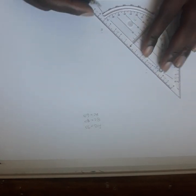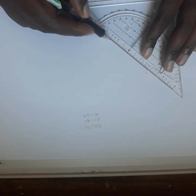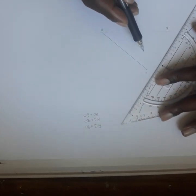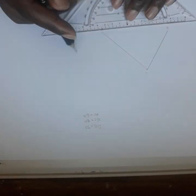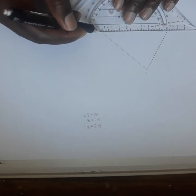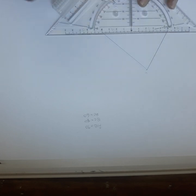After, I take my ruler. I join this point and this point. I join this point and this point. I join to complete AB.